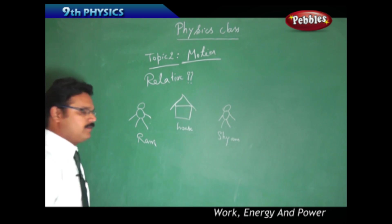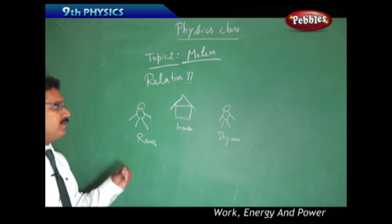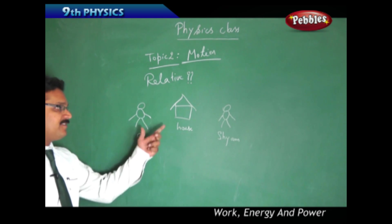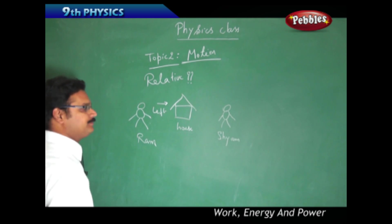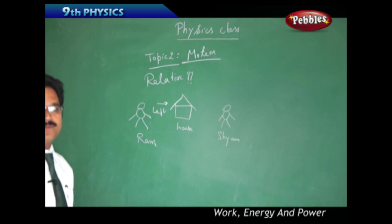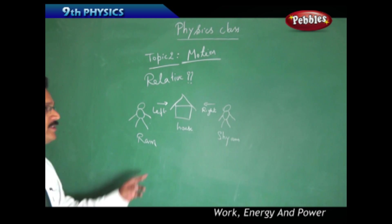When Ram is approaching the house and you ask Ram on which side the house is, Ram says it is towards his left side. Now if you ask Sham which direction the house exists, Sham says it is towards his right. Then who is correct here?